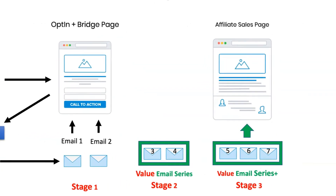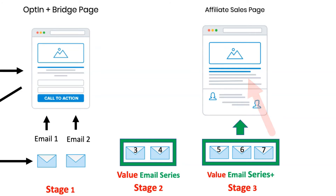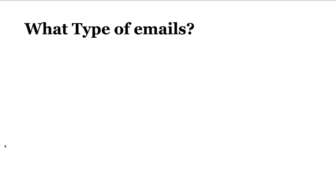In stage three there are three emails that you should send, and these go to the sales page — either an affiliate page or your own product. At this point, the psychology is that they're not fully sold yet and not really engaging with your emails that much, so they need a little more push toward the sale. If you're using Clickbank, their sales pages are generally good and do a lot of the selling for you.